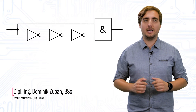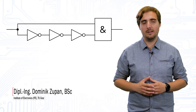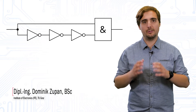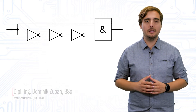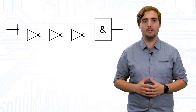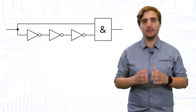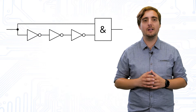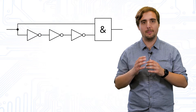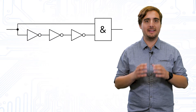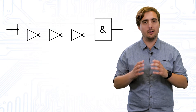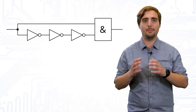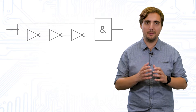Monostable multivibrators, or simply monostables or monoflops, can be used to create pulses. They have two states: one state is stable and the other one is unstable. A monostable will stay in its stable state until an external trigger causes it to flip. It will stay in the other state for a defined amount of time until it falls back to its previous stable state.